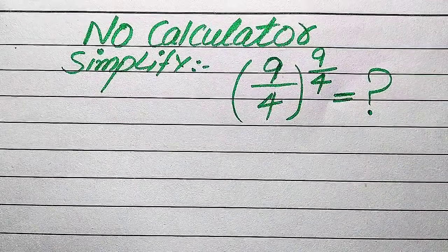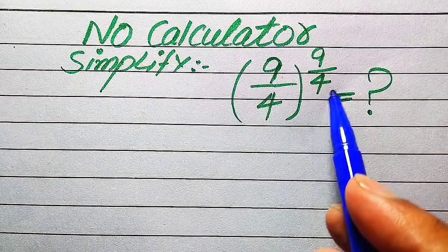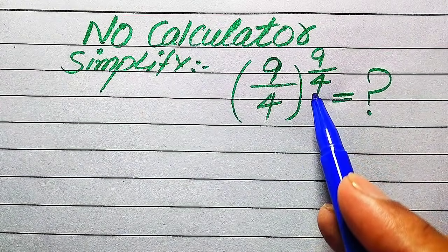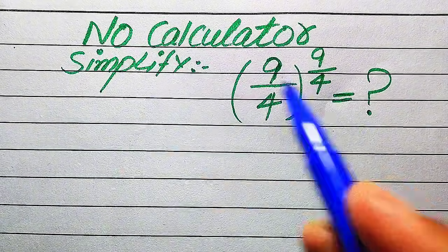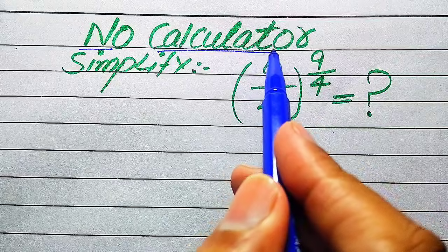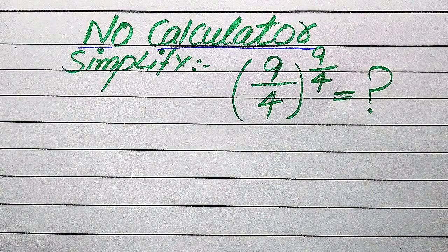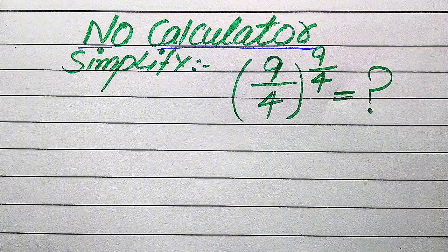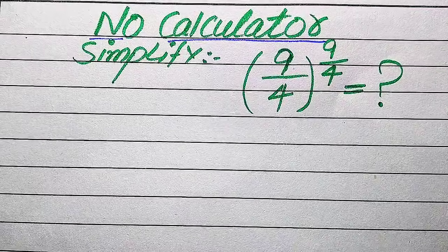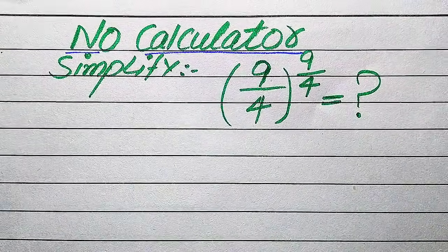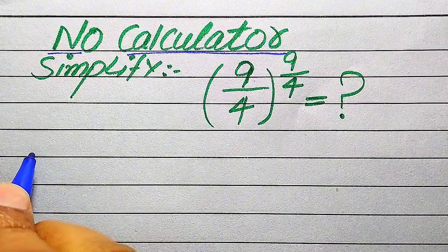Hello everyone. How to simplify this nice algebraic expression: we have 9 divided by 4, and its whole exponent is also 9 divided by 4. We write this algebraic expression into simplified form. Note that a calculator is not allowed in this problem, which means we need to show all the working on paper. We solve this problem step by step, and I can give you all the details. If you have any other method in mind, please don't hesitate to write it in the comment section.